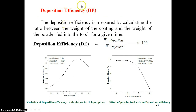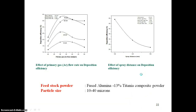Coating deposition efficiency is given by the weight deposited divided by the weight injected, multiplied by 100. A curve shows variation of deposition efficiency with plasma torch input power, and another shows the effect of powder feed rate on deposition efficiency. The feedstock powder used here is alumina-titania composite with particle size of 10 to 40 microns, examining the effect of primary gas on deposition efficiency.